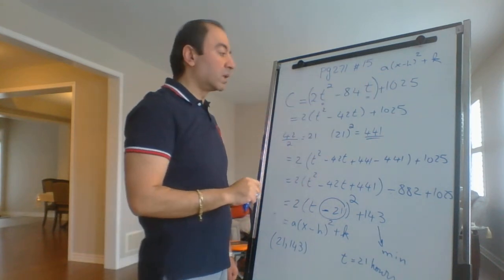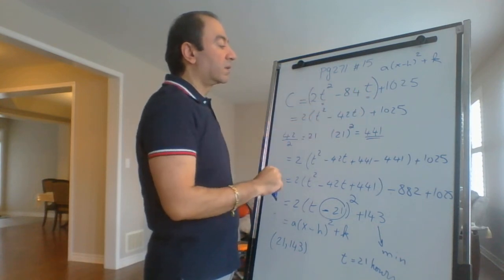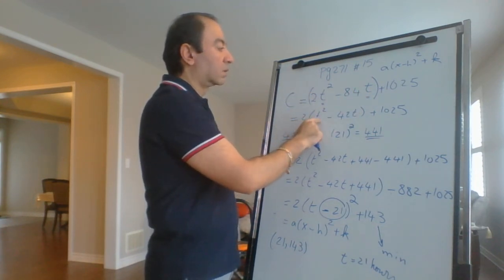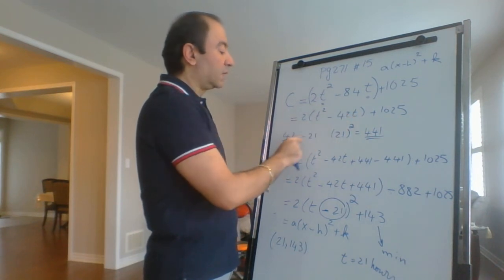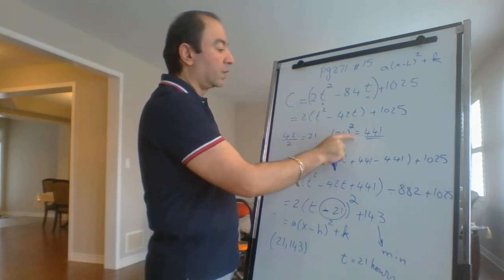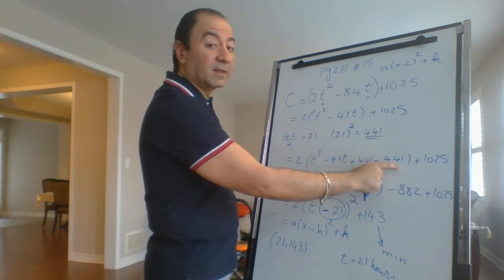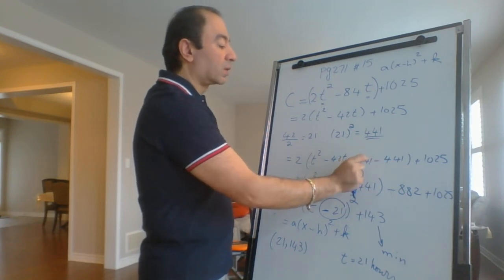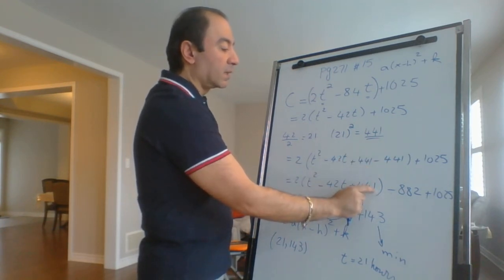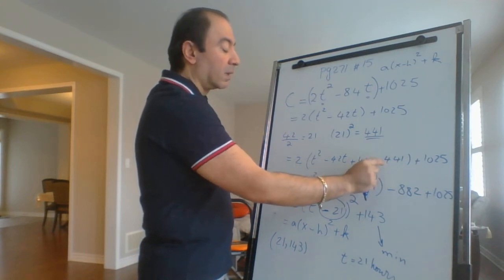What method do I use to switch from standard form to vertex form? The method of completing the square. What are the steps? Brackets around the first and second, third separate, factor a out. Get the number in front of T, divide by 2, square it. What are we going to do with it? Add it and subtract it, so we added zero—we didn't change anything.